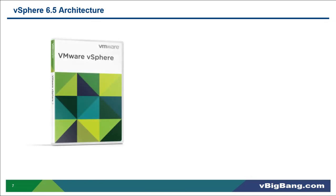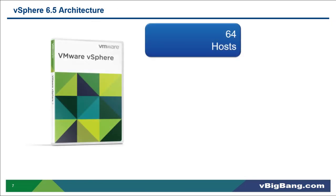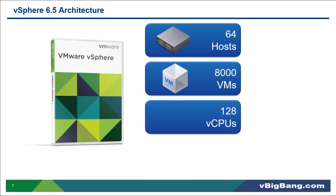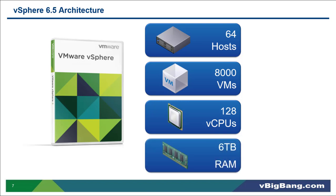VMware vSphere 6.5 architecture can support up to 64 hosts. It supports up to 8,000 VMs. It supports up to 128 vCPUs and can support 6TB of RAM.